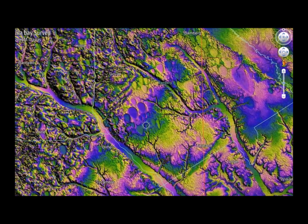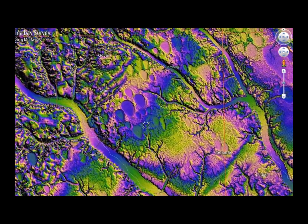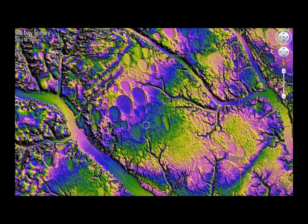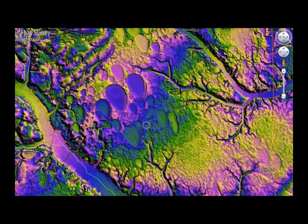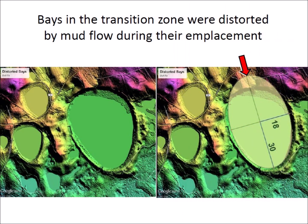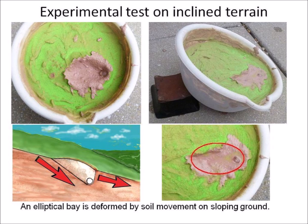The transition zone between high terrain and flat terrain has bays with a different shape from the elliptical geometry. Bays in the transition zone were distorted by mud flow during their emplacement; their shape was not modified as a result of erosion. The bottom portions of these bays still have elliptical geometry, but the portion against higher terrain was modified. The inclined terrain conditions can be simulated by tilting an experimental container during viscous relaxation. The diagram shows that a conical cavity on inclined terrain has a steeper inclination on the uphill side that allows increased mud flow, thereby creating the distortion.